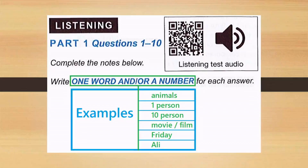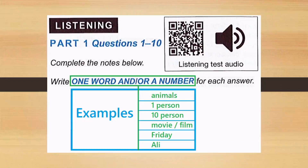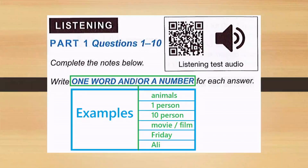Here is the example: animals — one person, ten person, one hundred person. So 'one' and 'ten' are showing a number, and 'person' is showing a word. Or you can write two words with a slash, like 'movie/film' — this will also be considered as one word.